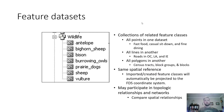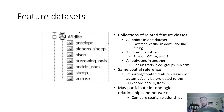Feature datasets are essentially like the file folder within the file cabinet — collections of features that are similar in nature. For example, all points in one dataset could be fast food, casual sit-down, and fine dining. Every point represents a restaurant, but a different type of restaurant. Within that folder, there could be multiple different files.